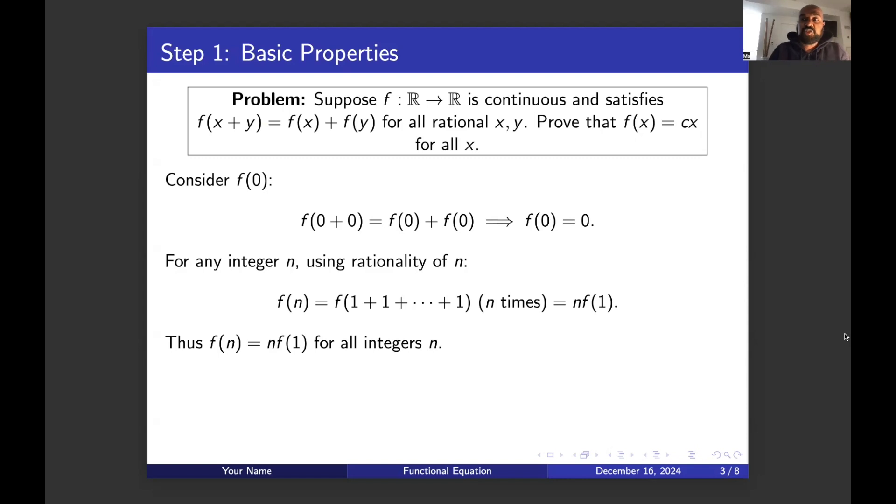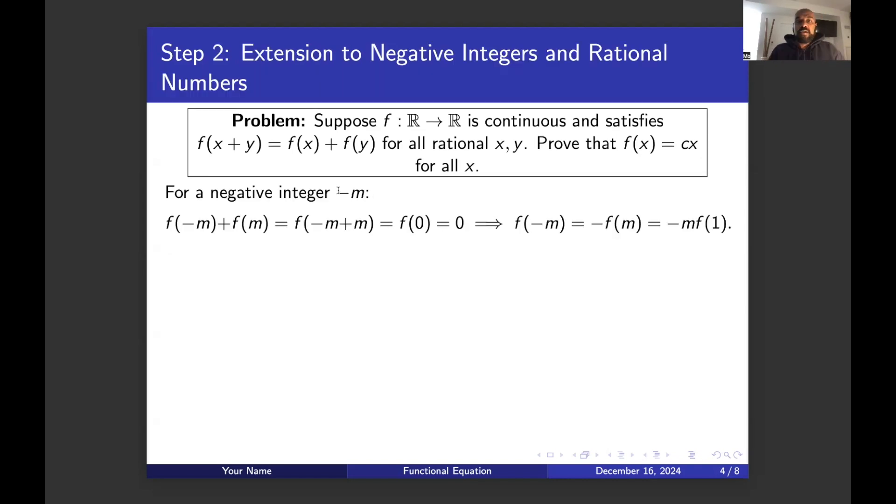Now it states here this is true for all integers, but it's actually only true for positive integers. So we need to take a look at what happens with negative integers. Okay, if negative m is an integer, that's a negative integer, then m itself is a positive integer.